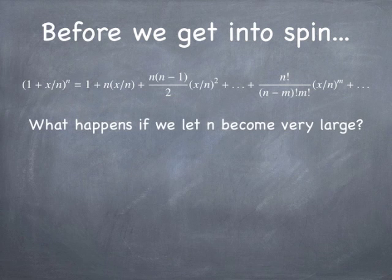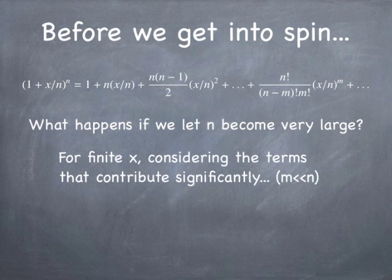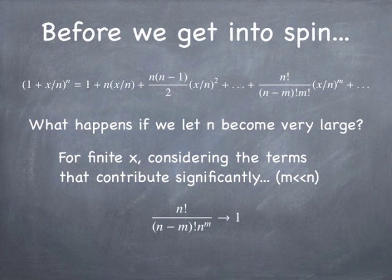If you let n become large — we're going to let the n value be very large — and we're going to have a finite value of x. So if n gets large, x divided by n becomes very small. That means only a small number of terms in this sum actually contribute significantly, so we only have to look at m values that are very small compared to n. In that limit, n factorial divided by (n minus m) factorial is very nearly n to the mth power, so the ratio of those two things approaches 1 as n becomes large.